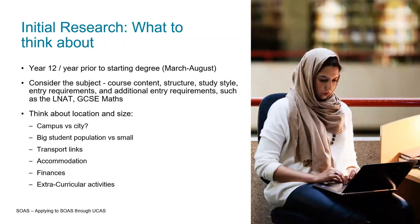In terms of things to think about when choosing, you need to consider the subject, the course content, the structure, the study style and the entry requirements. Are there any additional entry requirements such as the LNAT if you're looking at law, or if you need a certain level of GCSE or A-level maths to take a programme? You also need to think about the location and the size of the university and how you will cope in that environment.